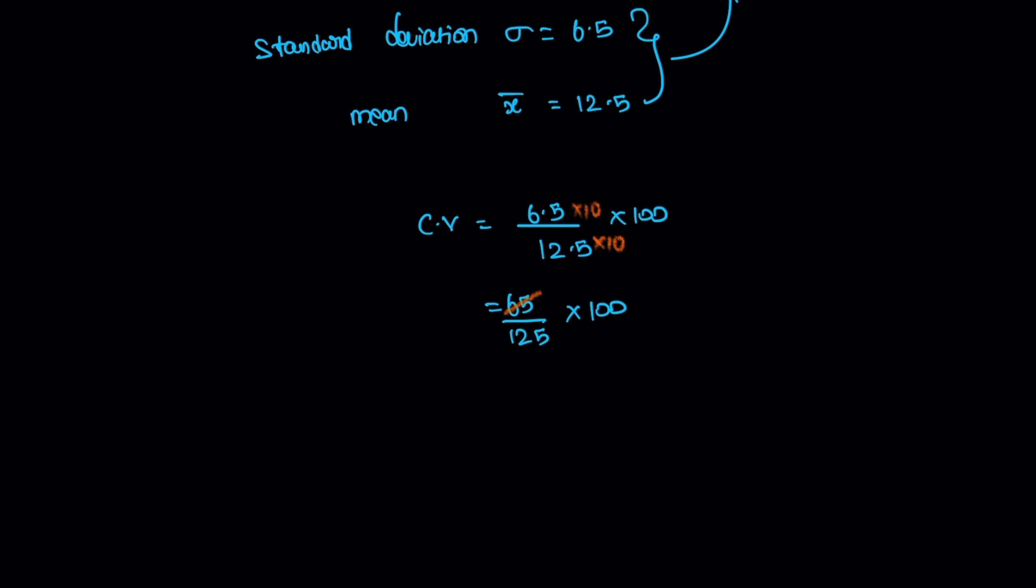Then, 65 and 125. 65 is equal to 13 times 5. 125 is equal to 25 times 5. That's all.